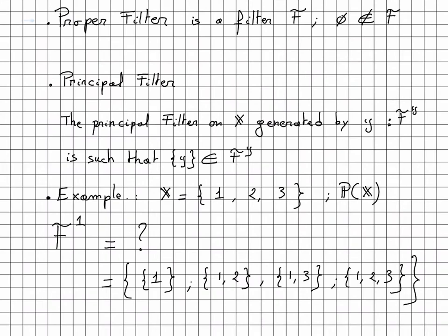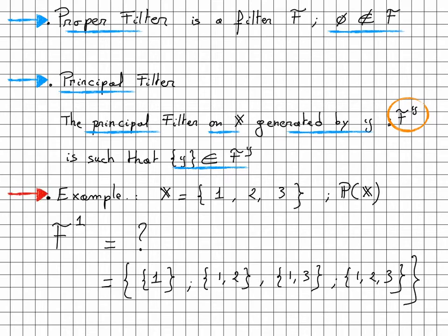This tells us that a filter containing the empty set is just not of interest here, which leads us to define a proper filter as a filter which simply does not include the empty set. Another important definition is the definition of a principal filter. The principal filter on X generated by Y is written F(Y), such that the set Y belongs to F(Y). Here is an example with X = {1, 2, 3} and the power set we already know. The filter F₁ should include the one-element set {1}, and then all sets for which this particular set is a subset: {1,2}, {1,3}, and {1,2,3}. You can verify that the intersection of all sets already belongs to the filter, hence verifying that axiom 1 is satisfied.